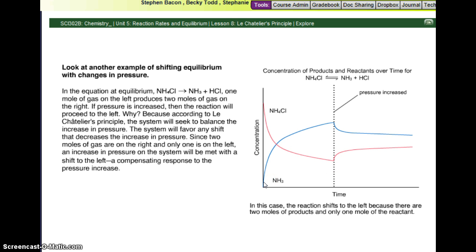Conversely, here we start out with no products, we're creating products, and then, whoa, we increase the pressure. I want less of the products because there's 2 moles versus only 1 mole of the reactant. In this case, the reaction shifts to the left because there are 2 moles of the products and only 1 mole of the reactant.